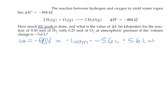The unit is liter-atmospheres — that's exactly what we multiplied together. But ultimately we need energy units, and a liter-atmosphere is not an energy unit. There's a conversion factor to get between liter-atmospheres and energy: 5.6 liter-atmospheres times 101.3 joules per one liter-atmosphere. That conversion takes our PV work and puts it into an energy unit.